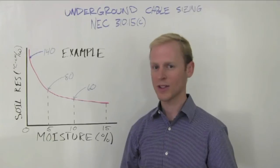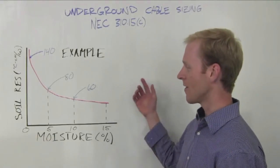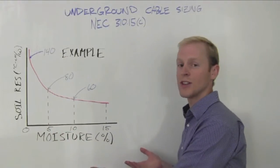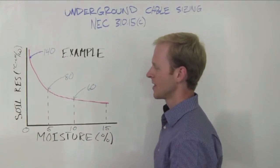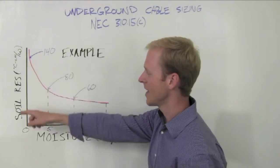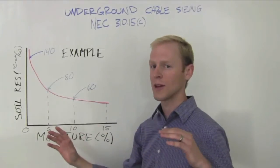One important aspect of those formulas is soil thermal resistivity. You can see an example of a curve of soil resistivity here. You can get this from a geotechnical study. Some important aspects are soil resistivity on the y-axis. Basically, it's a measure of how well heat can move away from a cable.